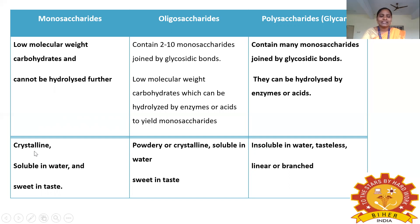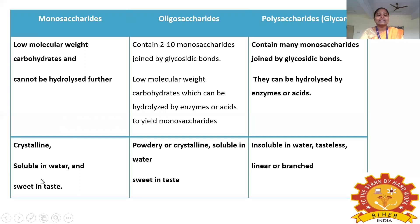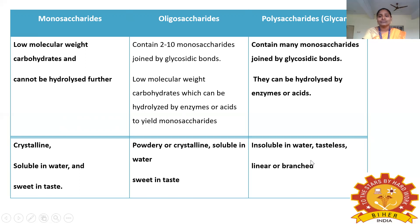Monosaccharides are crystalline in nature; oligosaccharides and polysaccharides are powdery or crystalline. Monosaccharides and oligosaccharides are soluble in water, but polysaccharides are insoluble. Regarding taste: monosaccharides (e.g., glucose) are sweet, oligosaccharides are sweet, but polysaccharides are tasteless. Polysaccharides may be linear or branched in structure.